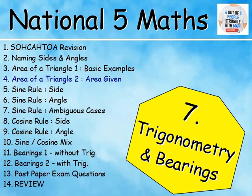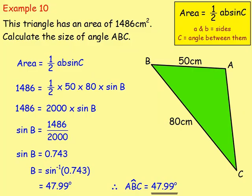We then looked at questions where we're given the area. With example 10, the area is 1,486 — work out the size of the angle. In order to do that, we just had to work backwards. We start with the same formula, area equals a half AB sine C, but sub in what we know: the area, the half, and the two sides — 50 and 80 — and it's the sine of the angle we're wanting to find. We can simplify by dividing by 2,000, which gives us the sine of the angle, then do sine to the minus 1 to get our answer.